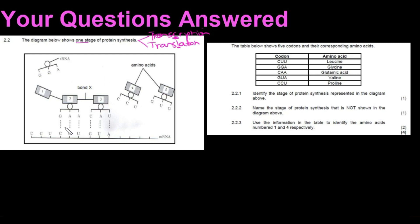Looking at this diagram, they could ask you to identify what stage we are looking at. I can already say this is translation, based on the tRNA that we can see. tRNA only occurs in translation and is only found in the cytoplasm, not in the nucleus where transcription takes place. They've also given us an mRNA strand and amino acids — the grayish rectangular blocks numbered one to five.